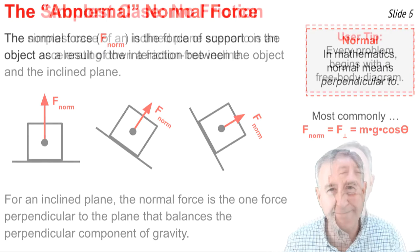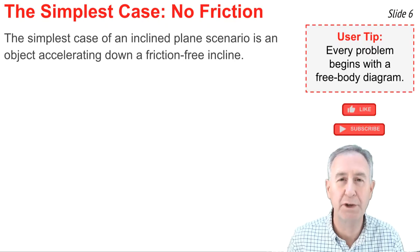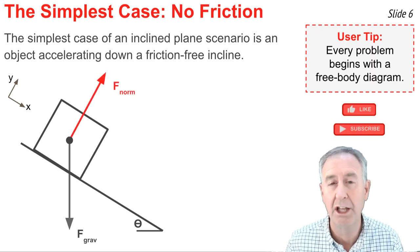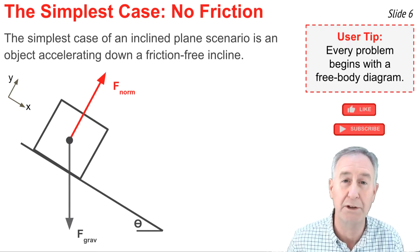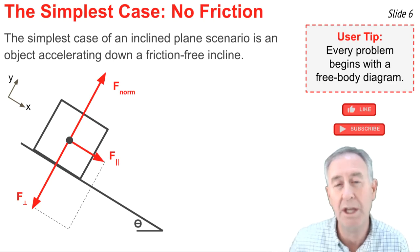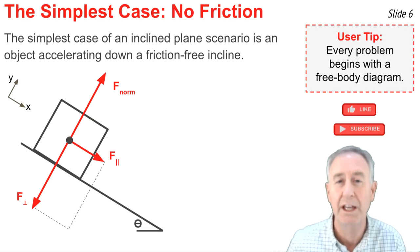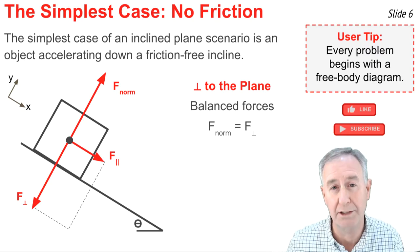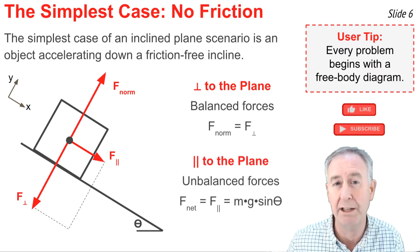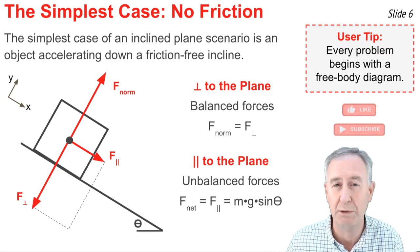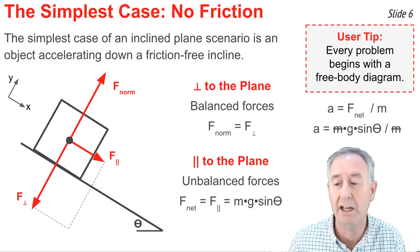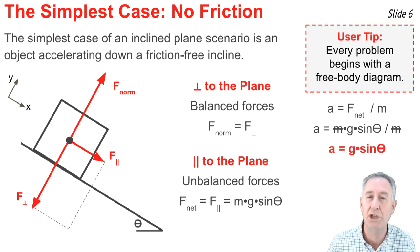The simplest inclined plane scenario is an object accelerating down a friction-free incline. We draw gravity straight down and the normal force perpendicular to the incline. Gravity is problematic because it's neither parallel nor perpendicular to the acceleration, so we resolve it into two components and then forget about the original gravity vector — it's been taken care of. Perpendicular to the plane there's no acceleration, so the forces balance: F-normal equals F-perpendicular. Parallel to the plane there's an unbalanced force — the parallel component — so F-net equals F-parallel equals mg sine of theta. The acceleration is F-net divided by m; substituting mg sine theta, the m's cancel, giving acceleration equals g times sine of theta.